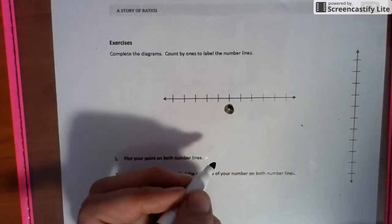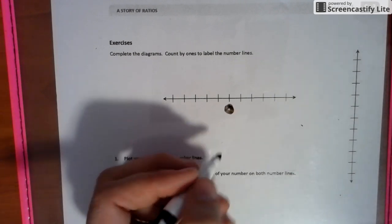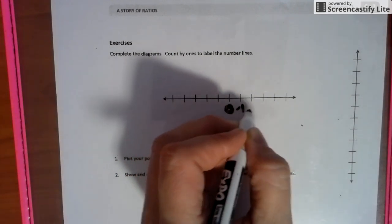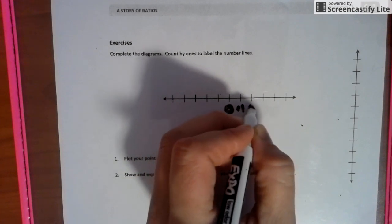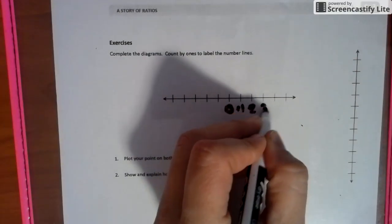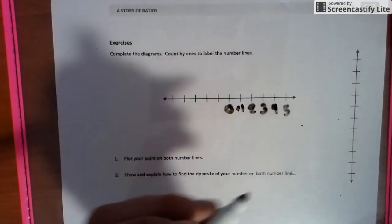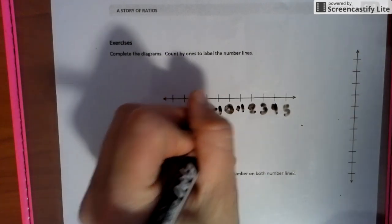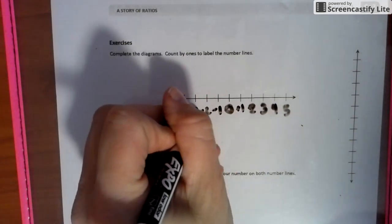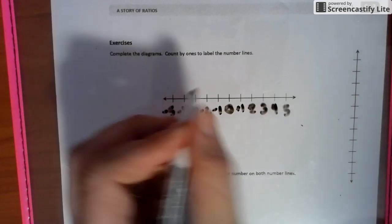Now, when we count by ones, we're going to label this line right up. So positive one, positive two, positive three, four, five. With me so far? Negative one, negative two, negative three, negative four, negative five.